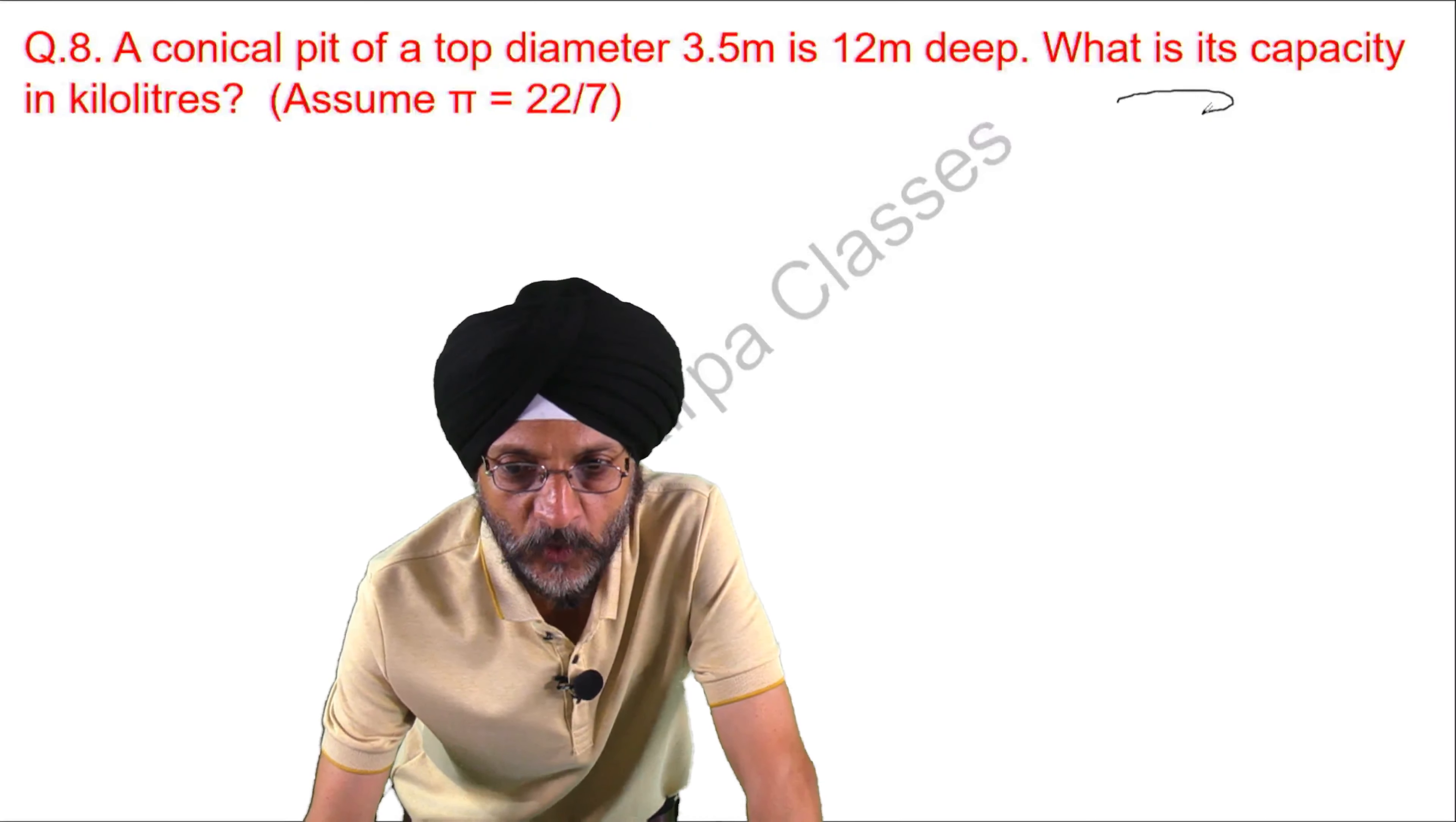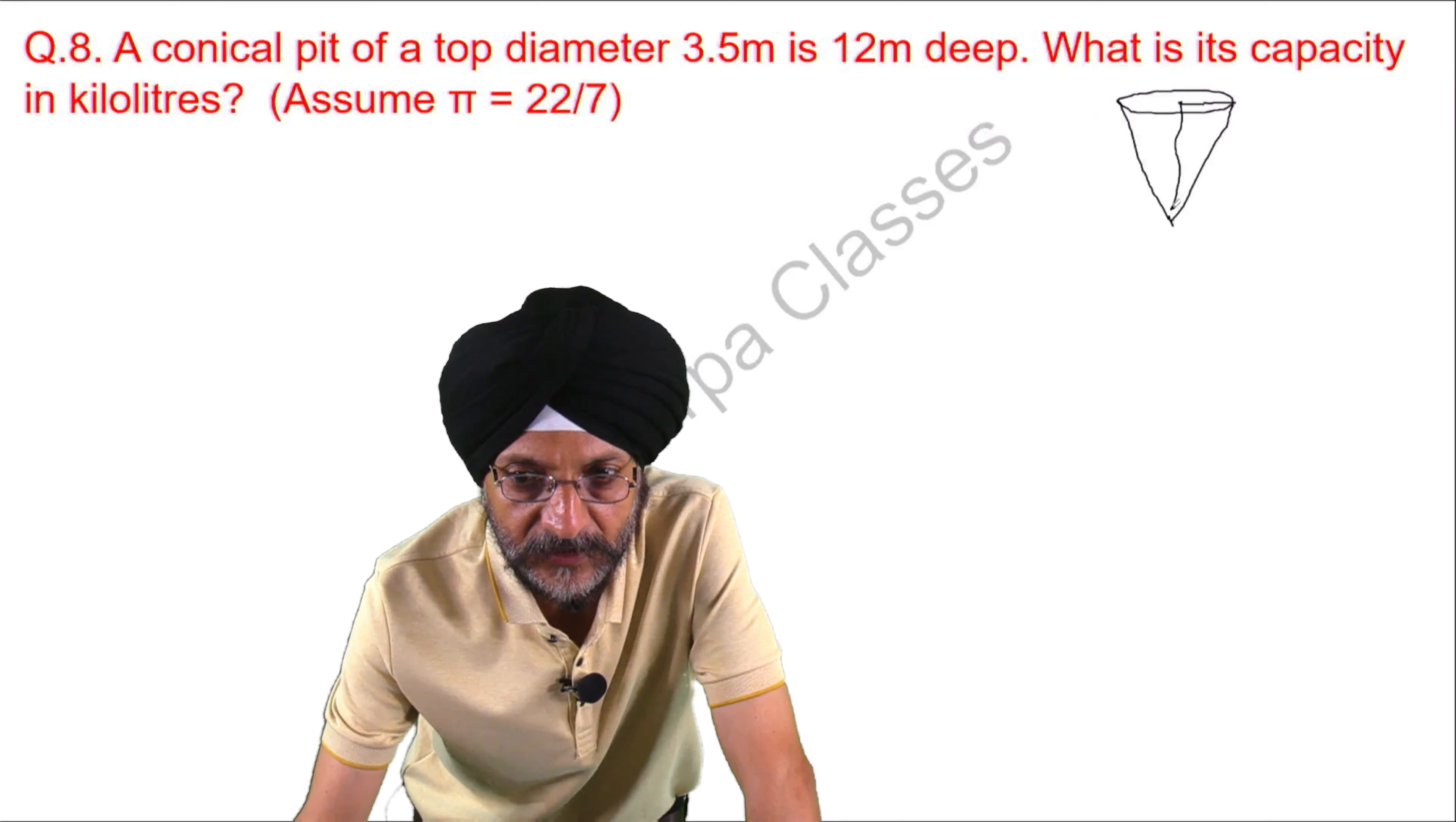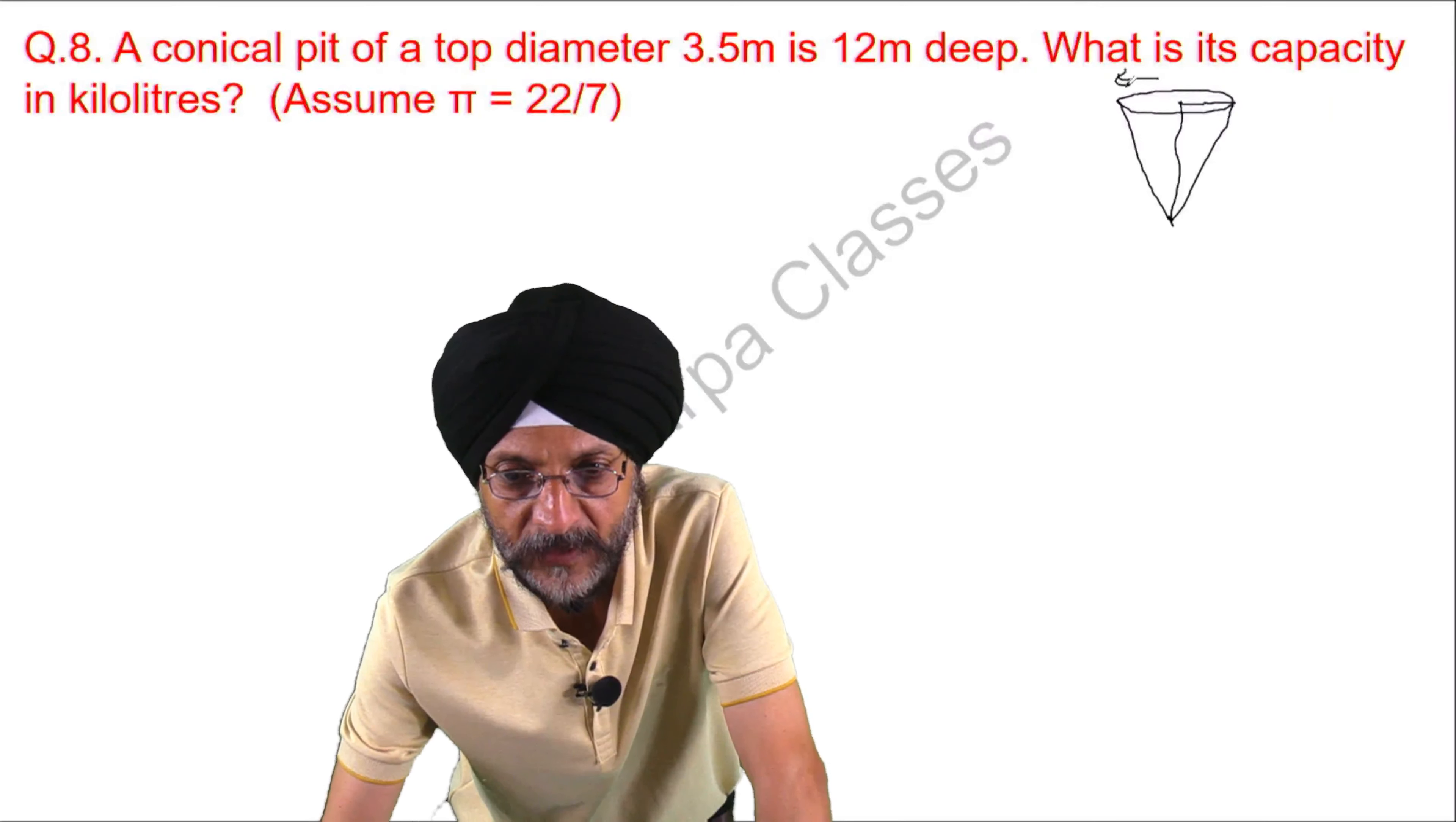This is the cone, this is the radius, this is the height. What we have been given is diameter is 3.5. It means that from here to here it is 3.5, it is diameter.